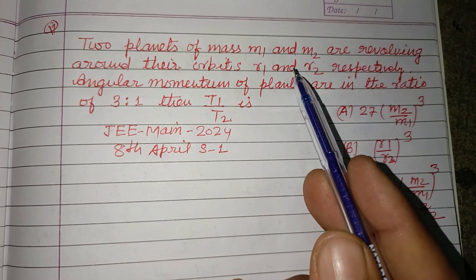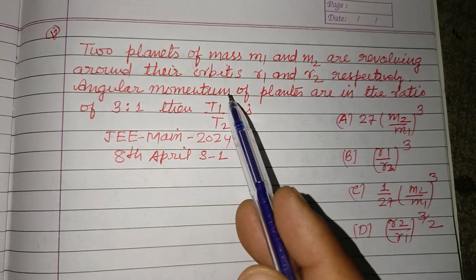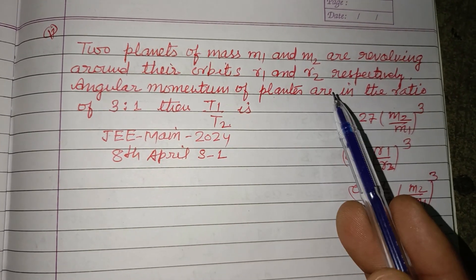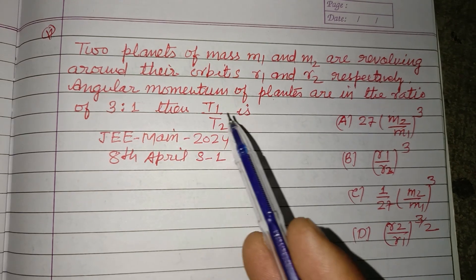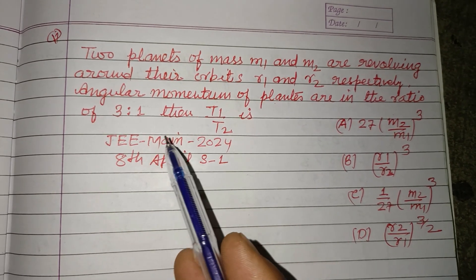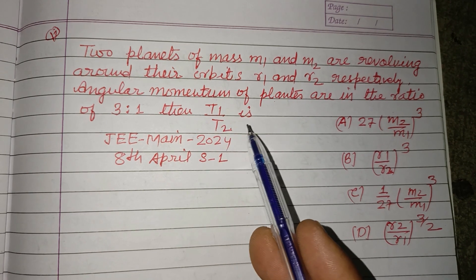Two planets of mass M1 and M2 are revolving around their orbits R1 and R2 respectively. Angular momentum of planets are in the ratio of 3:1, then T1 upon T2 is.